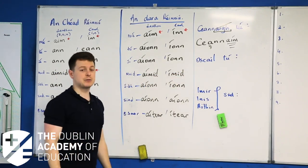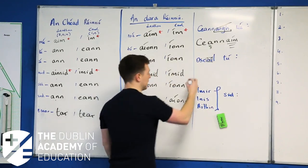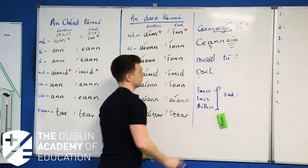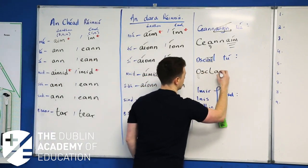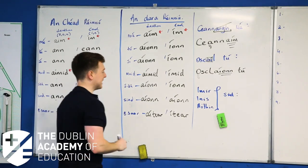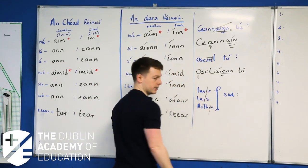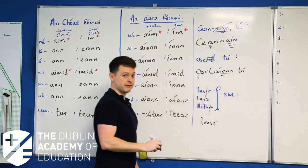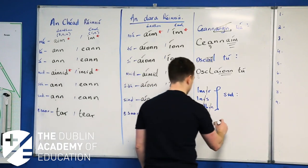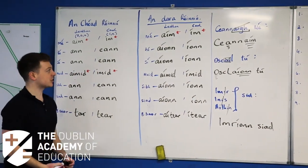Another type: oscail. With these -AIL verbs, you take out the A and the I but you keep the L. So you're left with O-S-C-L. The last vowel is O, so osclaím or osclaíonn. You open every day — osclaíonn tú. And imir, inis, and aithint — these look like one syllable but they're treated like two. You take out the last vowel. You're left with I-M-R. The ending for siad is -íonn. So imríonn siad — they play. And that's how you conjugate two-syllable verbs.